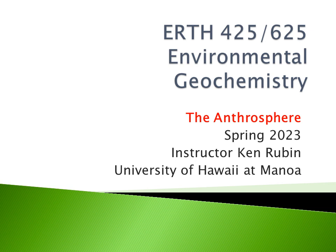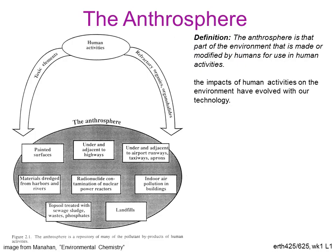This is the third in the series of week one topic videos for ERC-425-625 about the anthrosphere. As you read in the text, the anthrosphere is that part of the environment that is made or modified by humans for use in human activities. It's a little bit more conceptual than some of the other spheres — for instance, the atmosphere, which is a definable physical place, or the hydrosphere. The anthrosphere could also be a definable physical place.